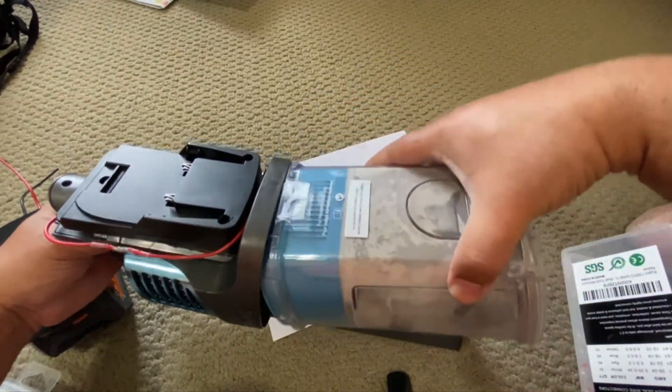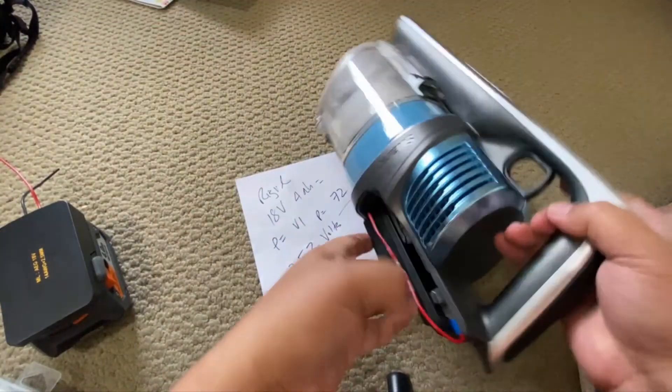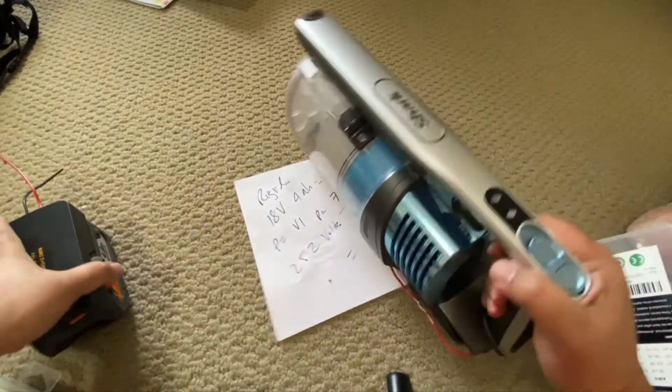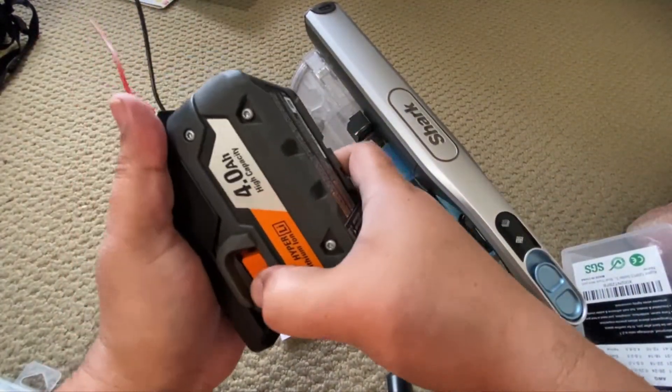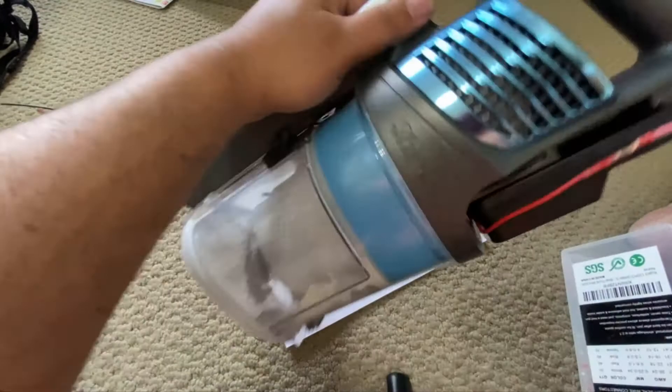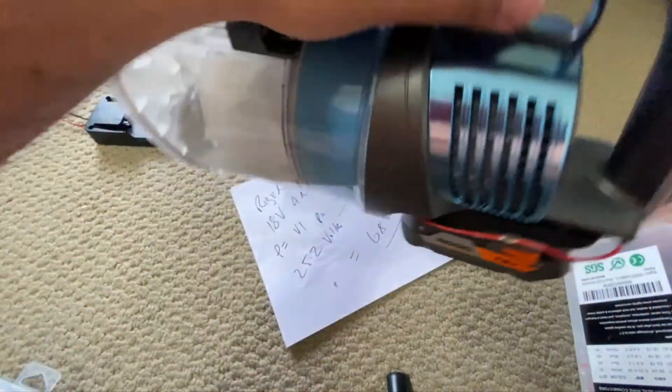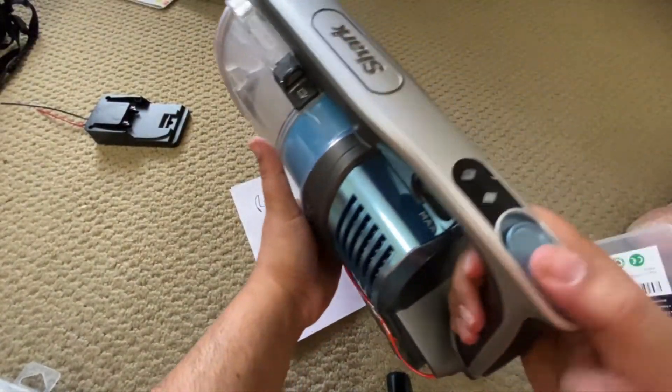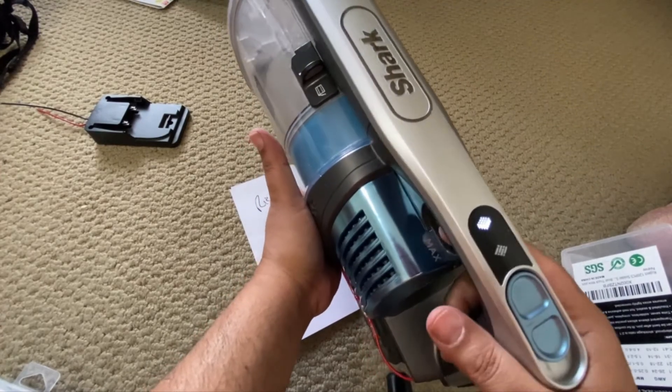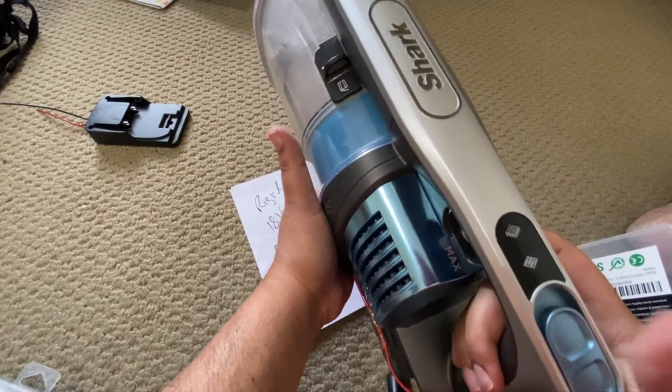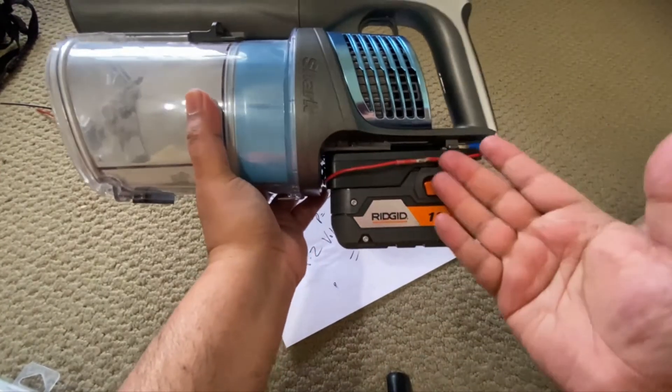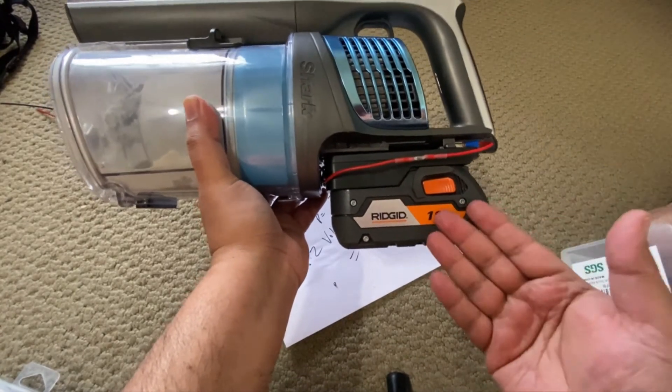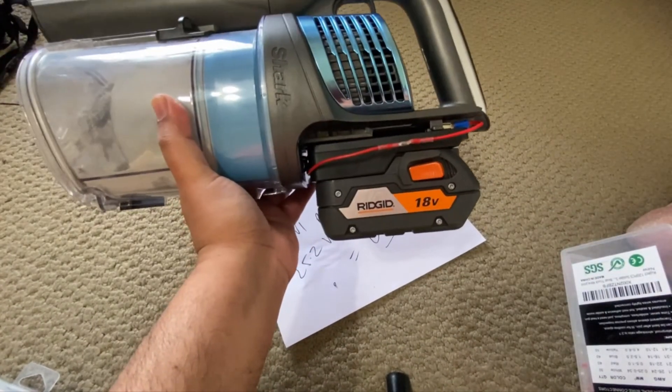Once it goes the other way, alright. Yeah so that's it. So the voltage is good, putting this battery on is good. Great, so you can connect the Rigid battery to a Shark vacuum cleaner. Thanks for watching.